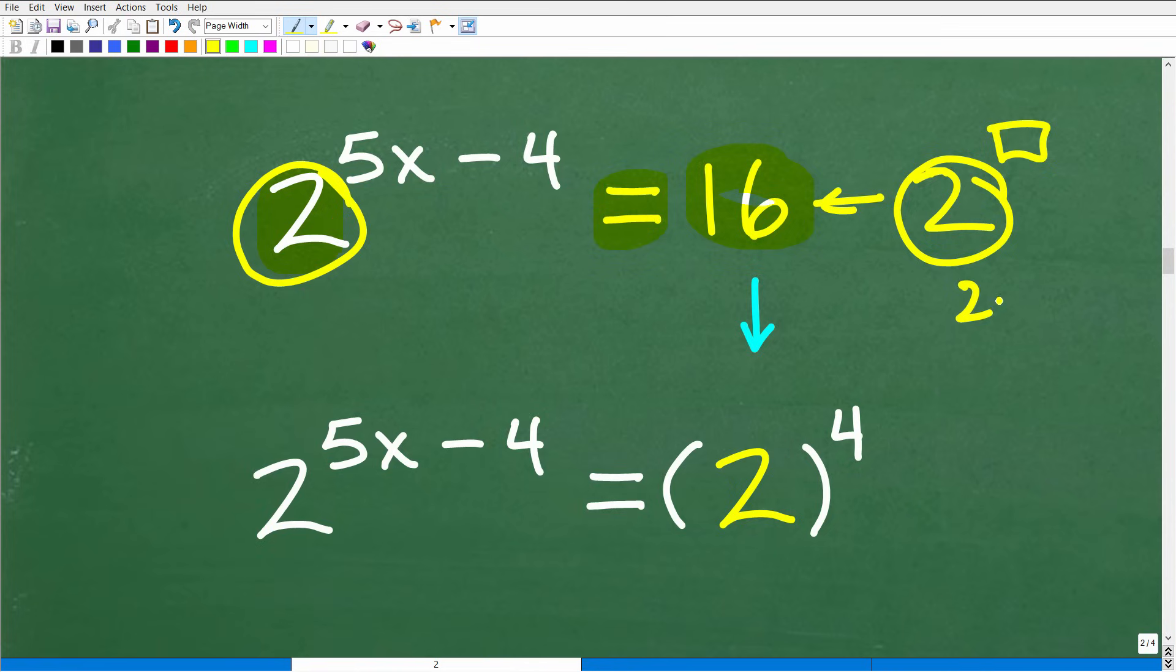So what I'm talking about here is this, I have two to the five x minus four and I have 16. So you want to just kind of look and say, well, can I express 16 where two is the base? Because you want to write everything with the same base if possible. And you look at this, of course, because two times two times two times two, two times itself four times is in fact 16.